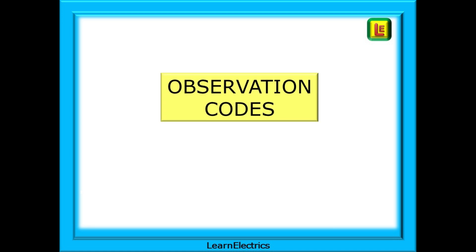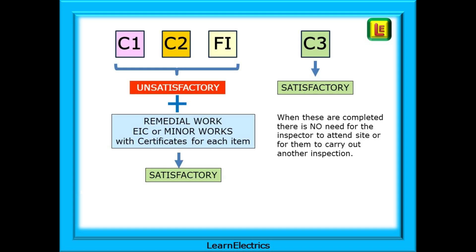What are the observation codes? What does each one mean, and how do we use them? There are four observation codes of interest to us in this video. C1, C2, and FI form a group together, with C3 standing on its own. When inspecting, your observations, if any, will point you to one of these four.